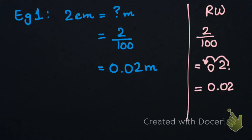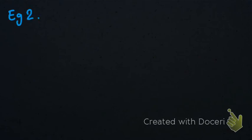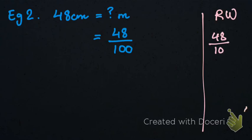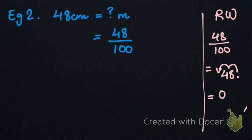Example number two: we have 48 centimeters and we have to convert them into meters. The first step is 48 divided by 100. We shift the decimal two places — we already have two digits, so the answer is 0.48 meters.